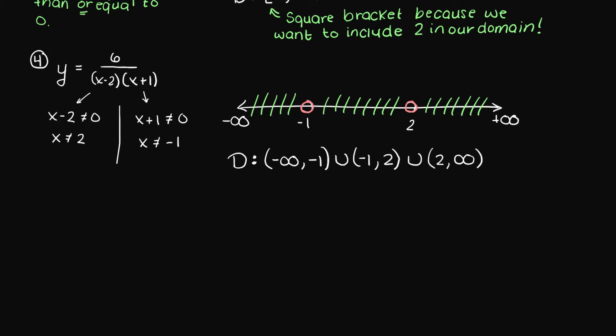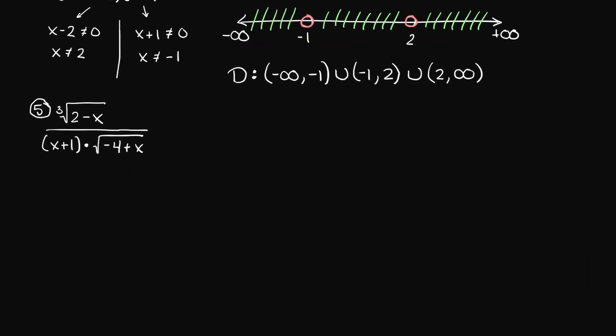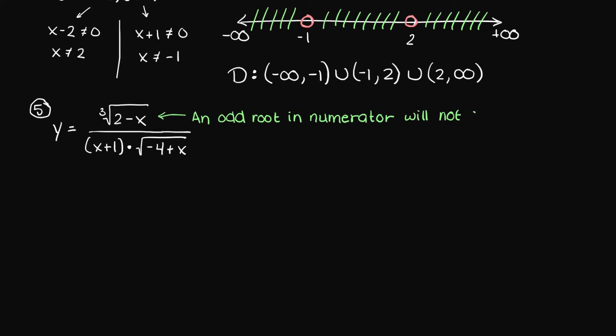The fifth question states that the cubed root of 2 minus x over x plus 1 times the square root of minus 4 plus x. All right, this one looks bad, but trust me, it's not. So on the top, we have an odd root. Odd roots do not affect our domain. I will prove this idea not in the next video in this playlist, but the one following that. I will also add a link to the top right corner of your screen to the video where I explain this theory.